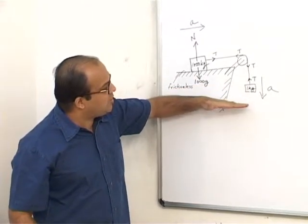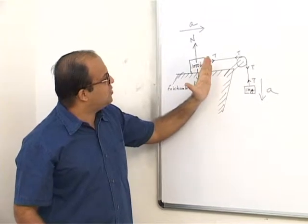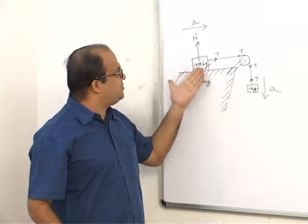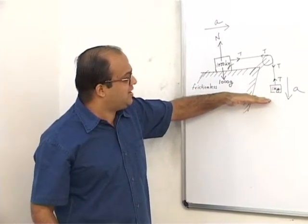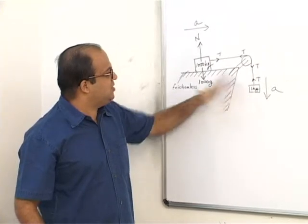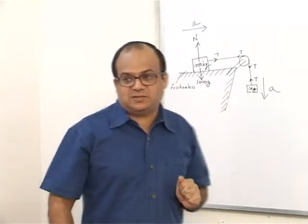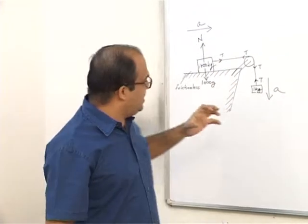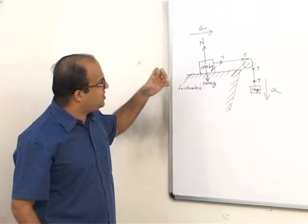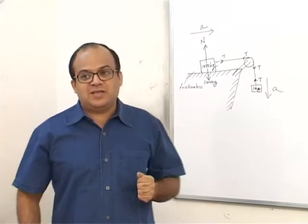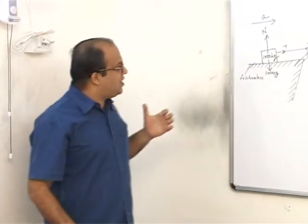If this object comes down by 1 cm, this object has to move to the right by 1 cm. So the magnitude of displacement is the same. Similarly, if this is moving at a velocity of 2 m/s at some instant, this object will also be moving with the same magnitude of velocity. So basically, a string changes the direction of displacement, velocity, and acceleration, but one string cannot change the magnitude of displacement, velocity, and acceleration.